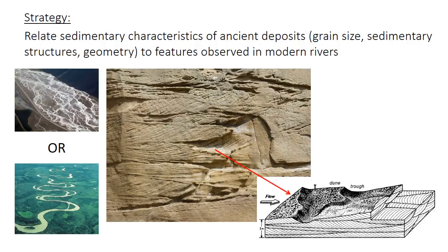The general strategy is that we'll use the characteristics of sedimentary deposits — like their grain size, sedimentary structures, and so forth — to infer the type of fluvial setting that might have generated them by making comparisons to modern rivers. This approach builds idealized models called facies models that outline all the sedimentary characteristics of a particular environment.